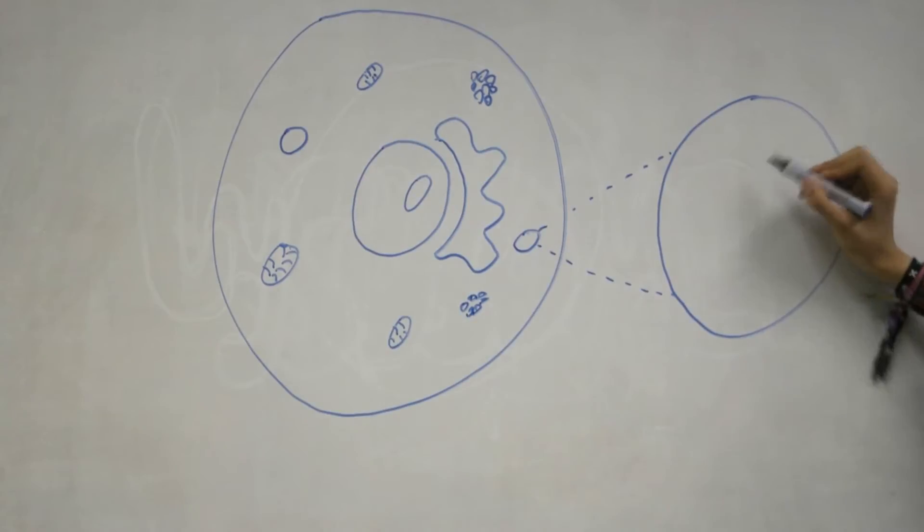The Golgi apparatus then does its final work to create the digestive enzymes and pinches off a small very specific vesicle. That vesicle is the lysosome.